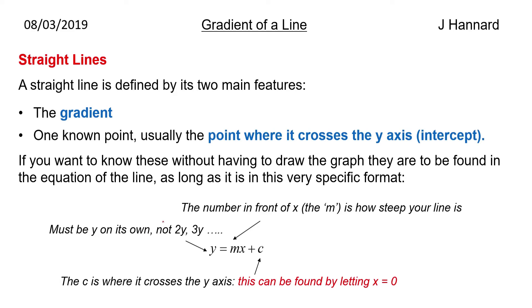y must be on its own as well — remember, you can't have 2y or 3y there for it to be in this form where we can read off the gradient and the intercept.